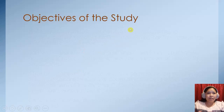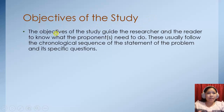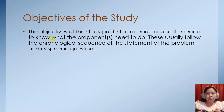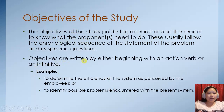Now we have the objectives of the study. The objectives of the study guide the researcher and the reader to know what the proponents need to do. This usually follows the chronological sequence of the statement of the problem and its specific questions. From the statement of the problem, you just need to change the questions into declarative form. The objectives are written by either beginning with an action verb or an infinitive — for example, 'to determine the efficiency of the system as perceived by the employees' or 'to identify possible problems encountered with the present system.'